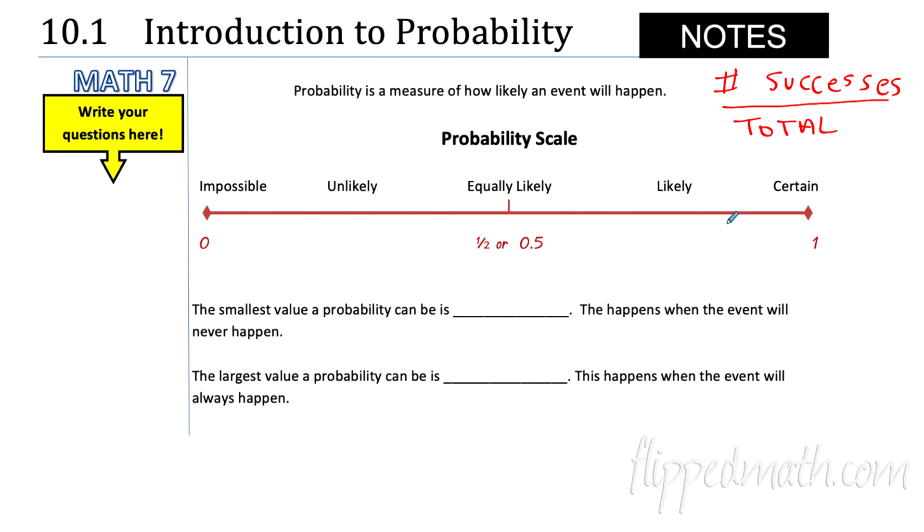All probabilities will fall between zero and one. So if you have an event and if half the time it will happen and half the time it won't, that would be equally likely, that would be right in the middle here at around 0.5. The smallest value a probability can be is zero and this will happen when the event will never happen. But the largest value a probability can be is one. So all probabilities must be a decimal or a fraction between zero and one.